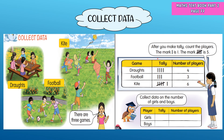After you make the tally, count the players. One bar mark represents one, and a set of five marks represents five. For draughts, the tally gives four players. For football, counting the tally gives one, two, three, four, five, and six players.